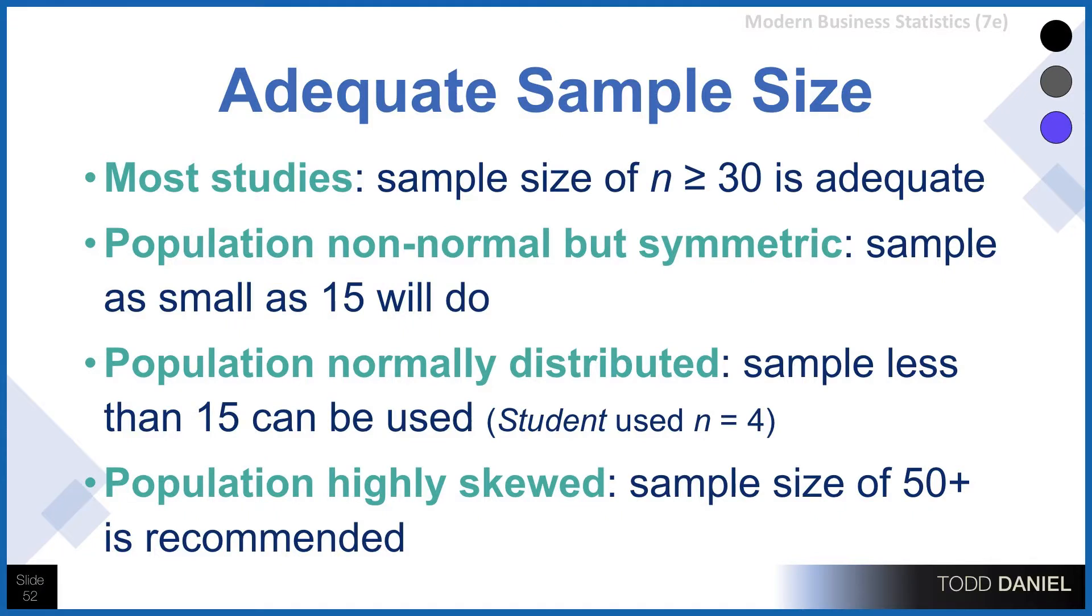Here's some general rules. To determine an adequate sample size for most studies, if your sample size is greater than or equal to 30, it is going to be adequate.